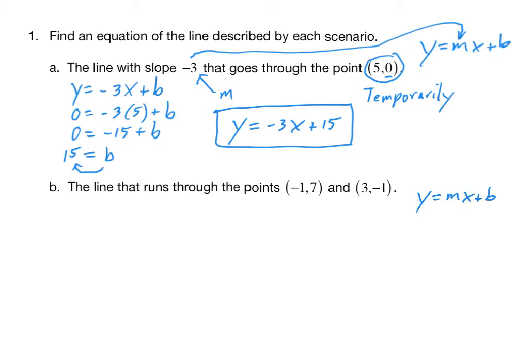But if you can recall from our previous studies, you can compute the slope by taking the difference in the y values, -1 minus 7, over the difference in the x values in the same order. So 3 minus -1. Using our slope formula, we get -8 over 4. -8 divided by 4 is -2. So we had to do a little bit more work this time. m was not given to us, but we now have it.